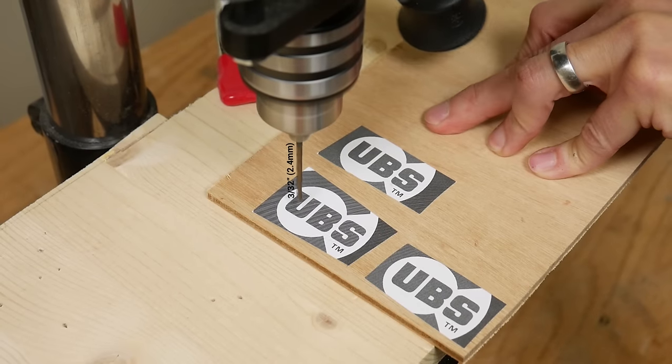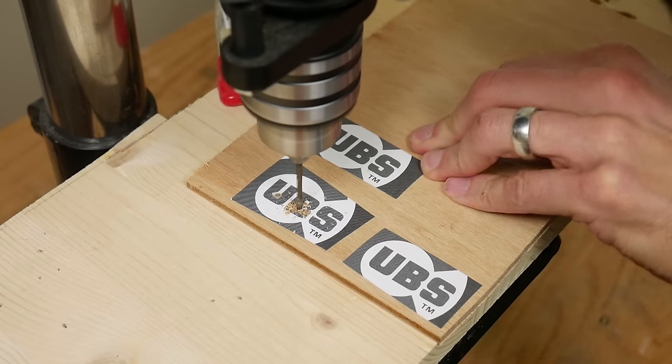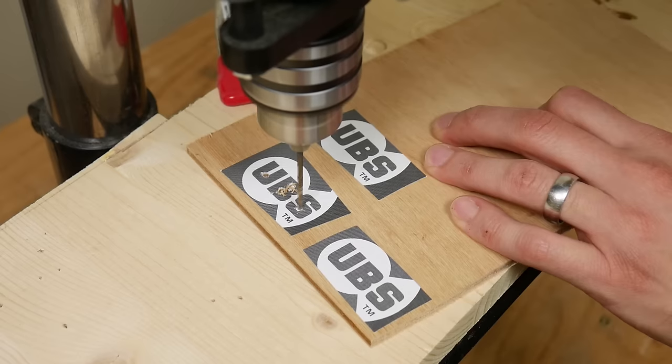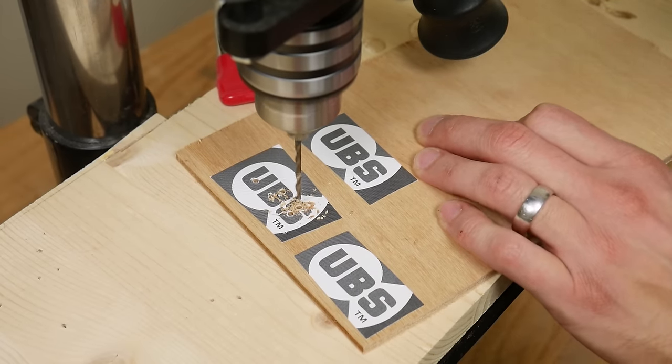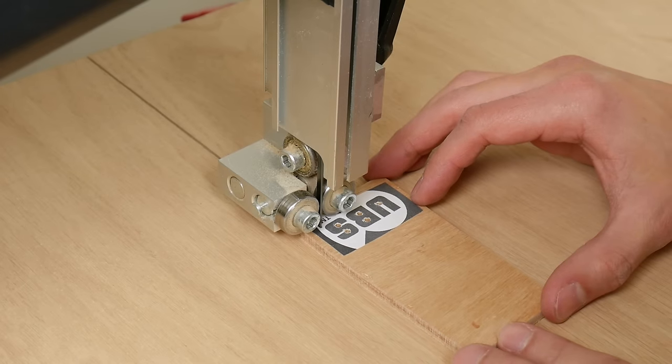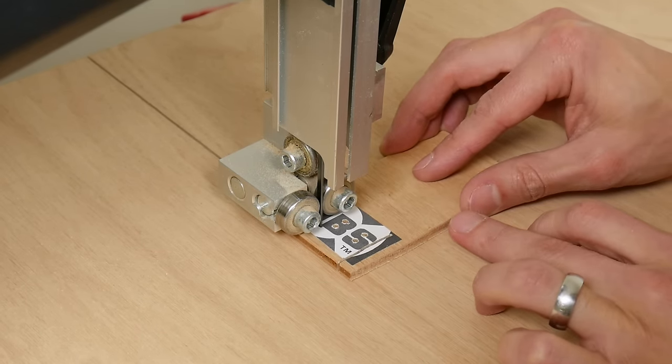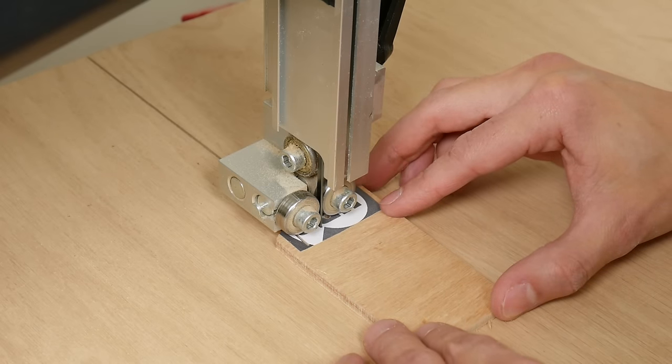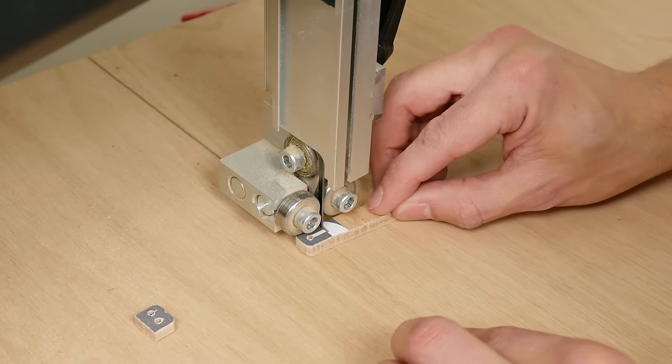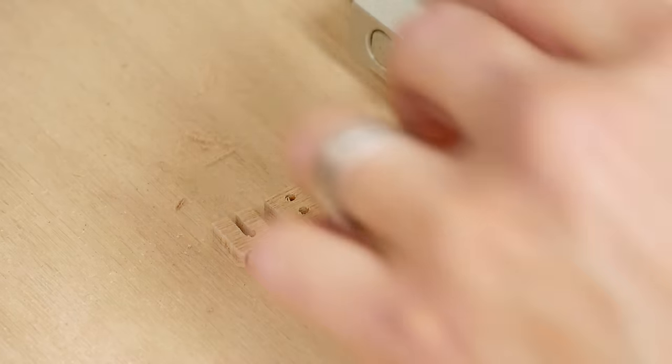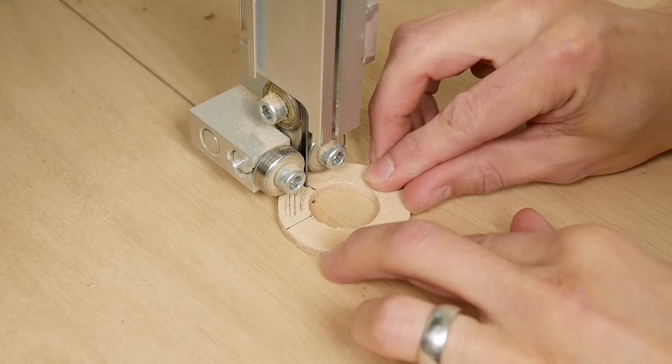I used a 3/32nd inch drill bit to start cutting out the letters. Then finished cutting them out on a bandsaw. I also used my bandsaw to cut out the part I marked to make the big C.